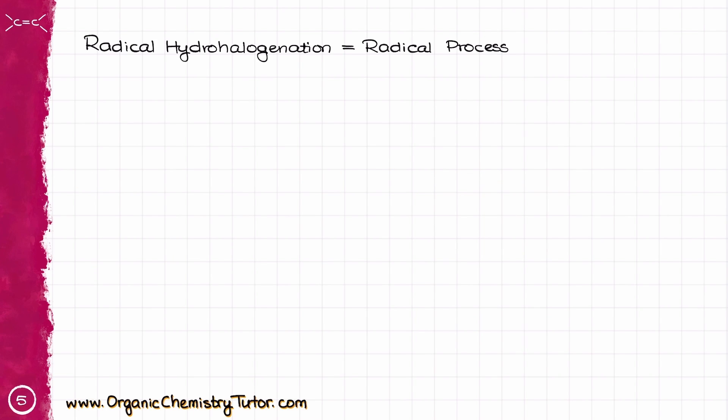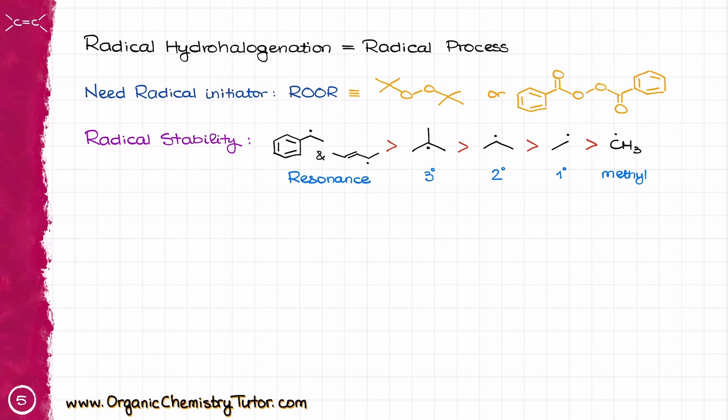Alright, to recap, remember that the radical hydrohalogenation is a radical process and uses its own special rules for the electron movement using the fish hook or half arrows. We also need the radical initiator to kickstart our reaction. Typically, we are going to use organic peroxides. We are always going to form the most stable radical in this reaction,